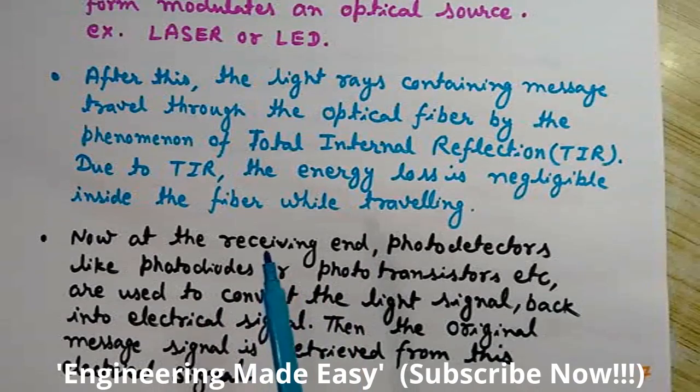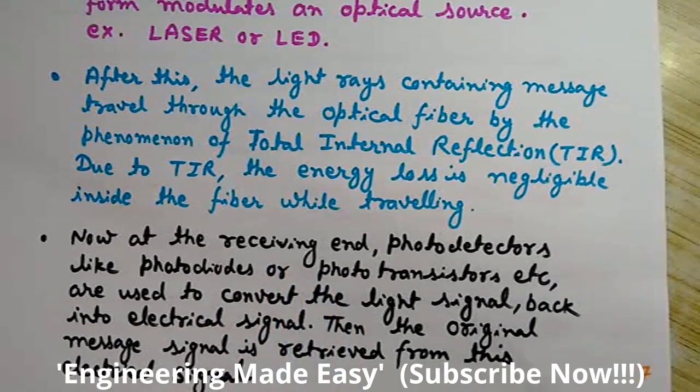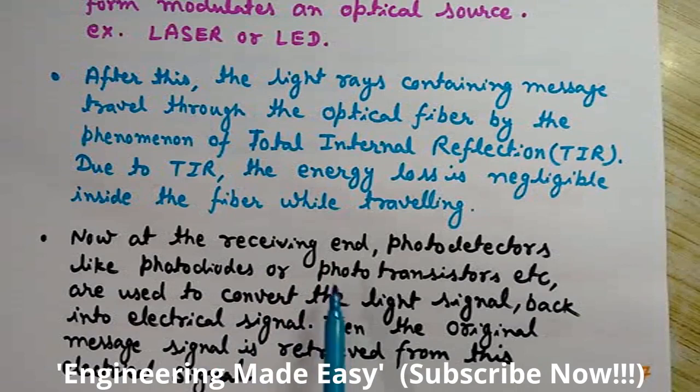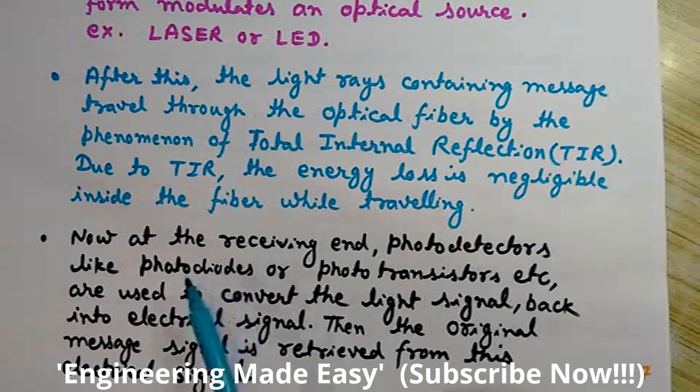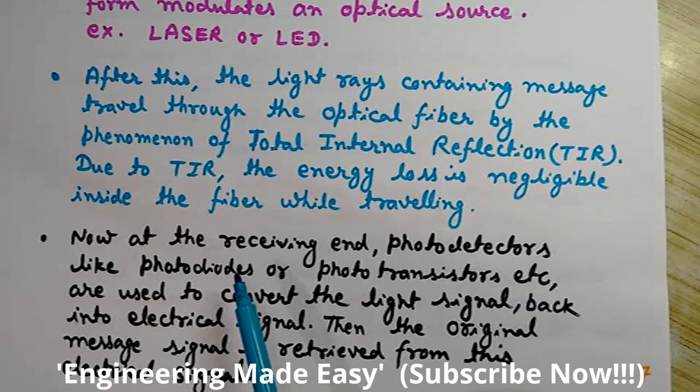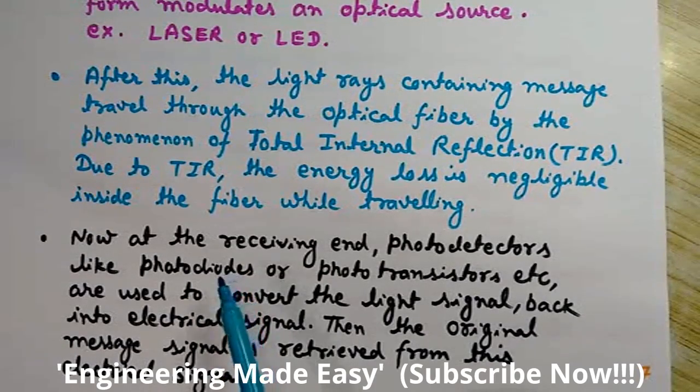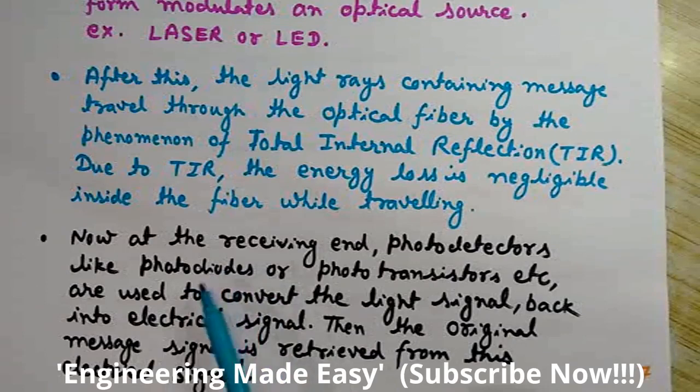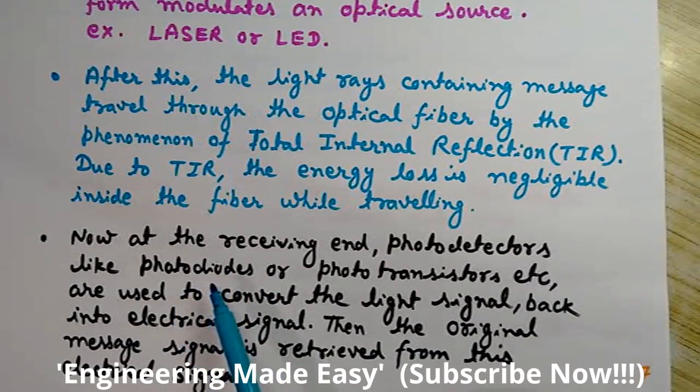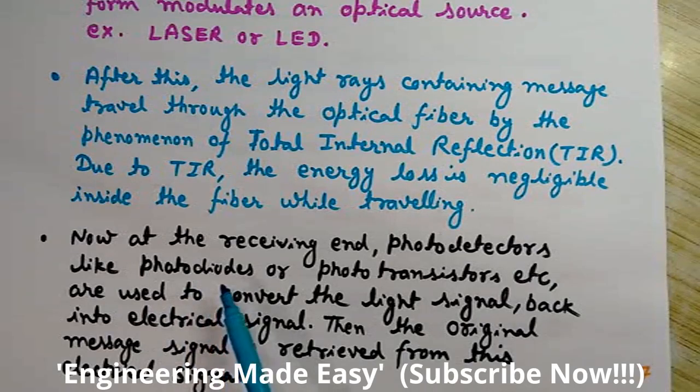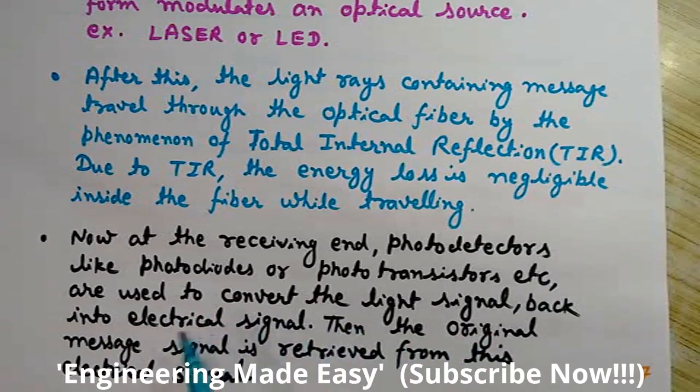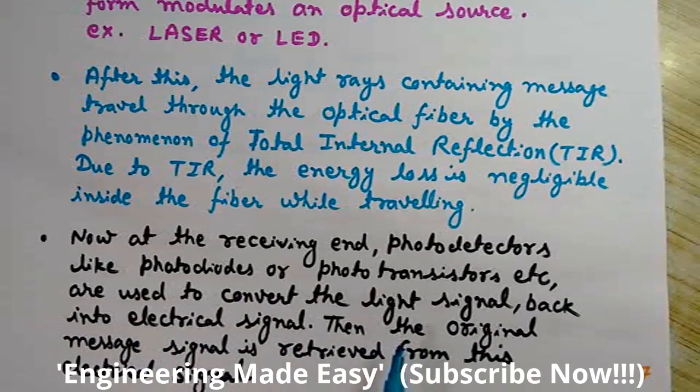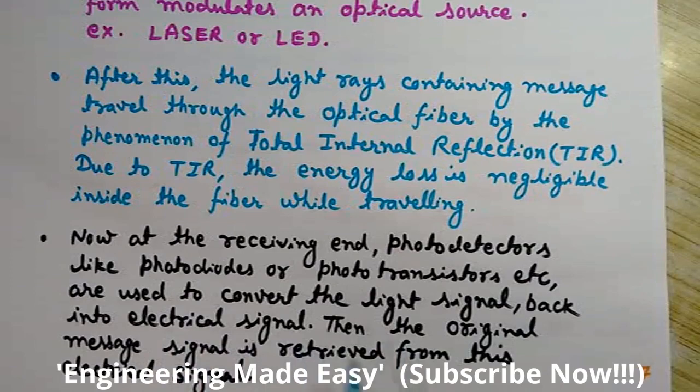We can do this using photo transistors or photodiodes. These are the devices used at the receiving end that are sensitive to light, that can produce electrical signals and are very sensitive to light or photons. So these are converted back into the electrical signal. Then the original message signal is retrieved from this electrical signal.